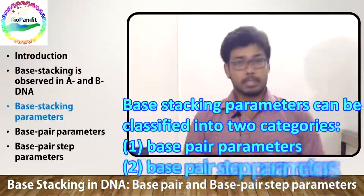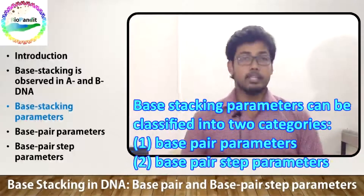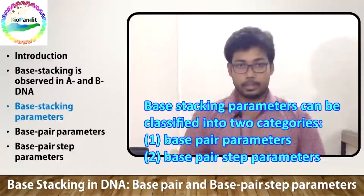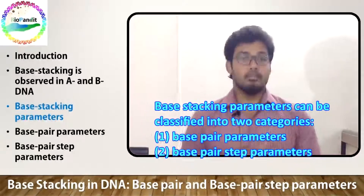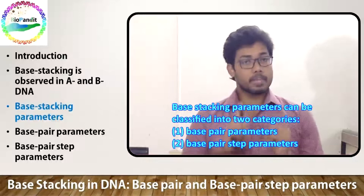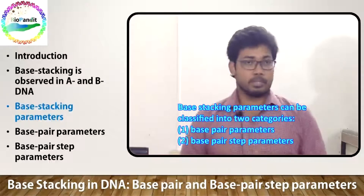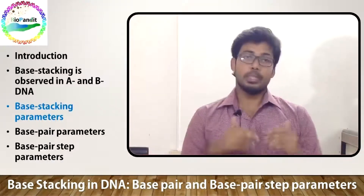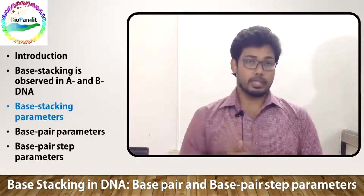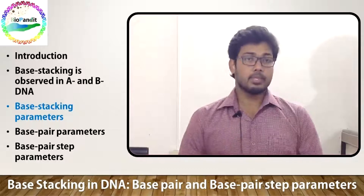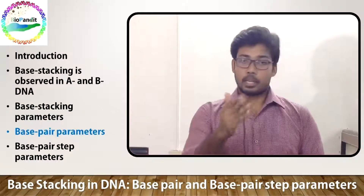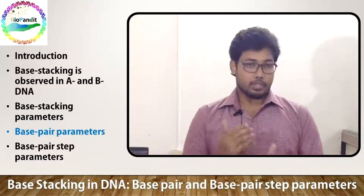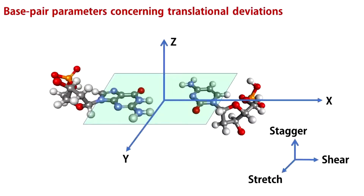Base stacking parameters can be classified into two categories: base pair parameters and base pair step parameters. First, we will define the Cartesian coordinate system. You can see the x, y, and z axes here. Let us start with base pair parameters.